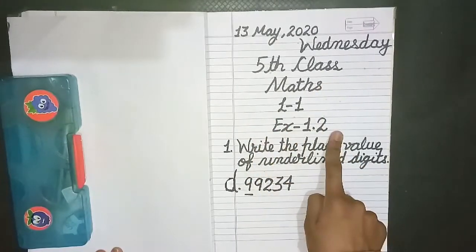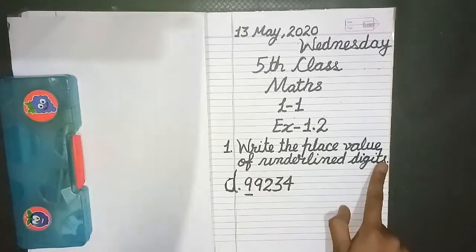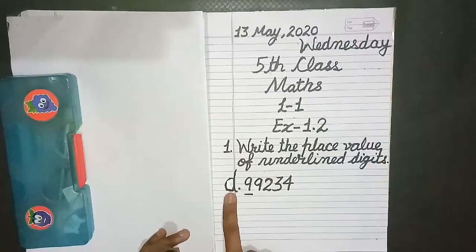Lesson 1, Exercise 1.2. First, write the place value of underlined digits. So here we have example 99234.